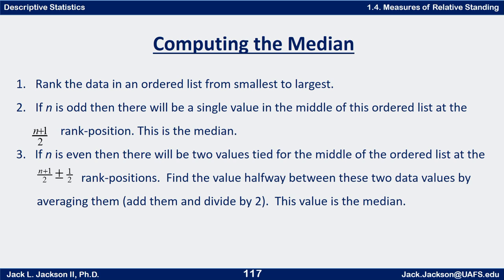If n is even, there will be two values tied for the middle of the ordered list. Say there are four data values — the second and third are tied for the middle. What you do is average those two: add them up and divide by two to get the median. In the even case, exactly half the data is below and half is above. In the odd case, if you don't count the median itself, half the other values are above and half are below.